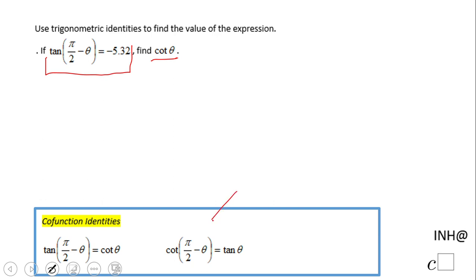Here we have something that we call cofunction identity. It looks exactly like what we have here, right? We have tangent of pi over 2 minus theta equals cotangent of theta. I'm going to switch this guy right.